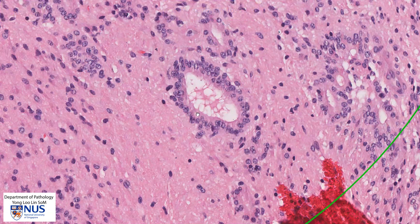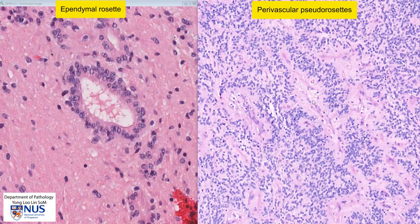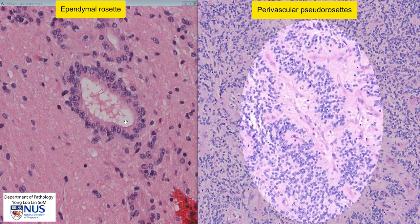Let's do a quick comparison of the two types of rosettes. On the right, we can see the perivascular pseudorosettes with the blood vessel in the center, this fibrillary material and then the nuclei around it. On the left, we can see a true ependymal rosette with a proper central lumen and a very sharply defined luminal border. True ependymal rosettes are actually relatively rare in ependymomas; we most frequently encounter the perivascular pseudorosettes.